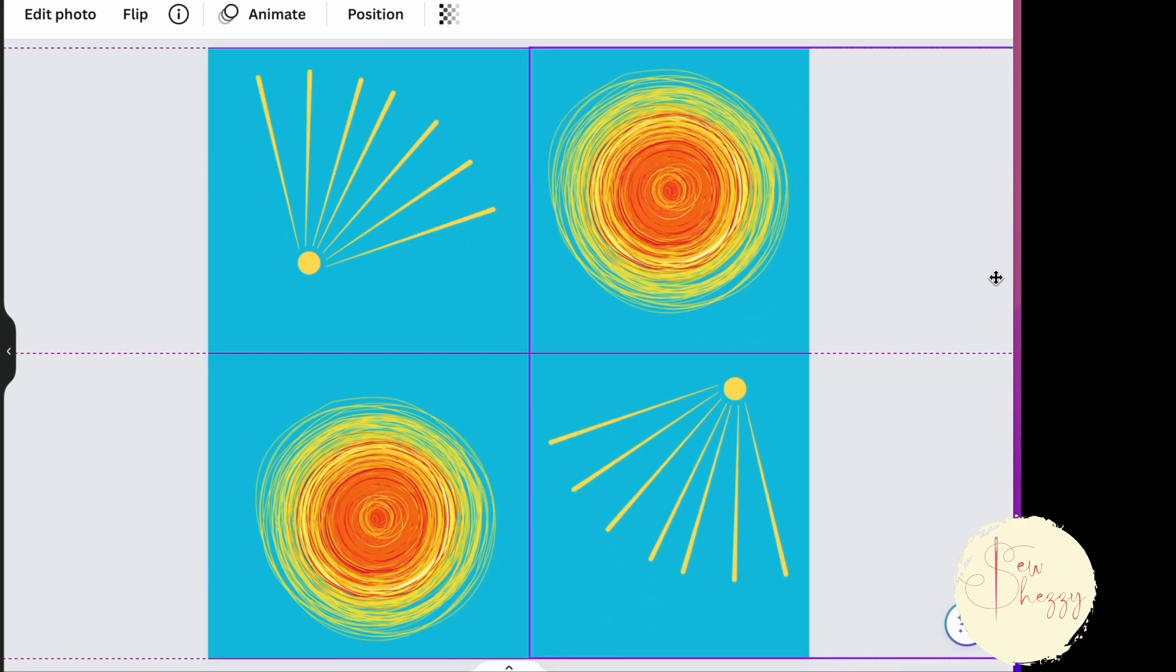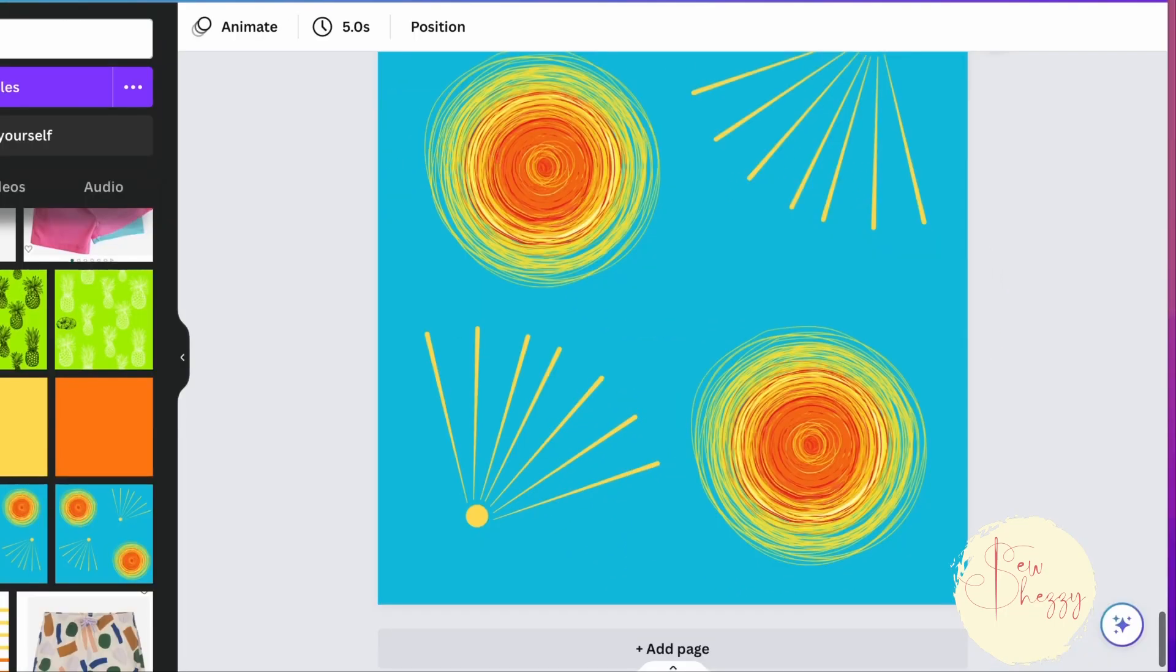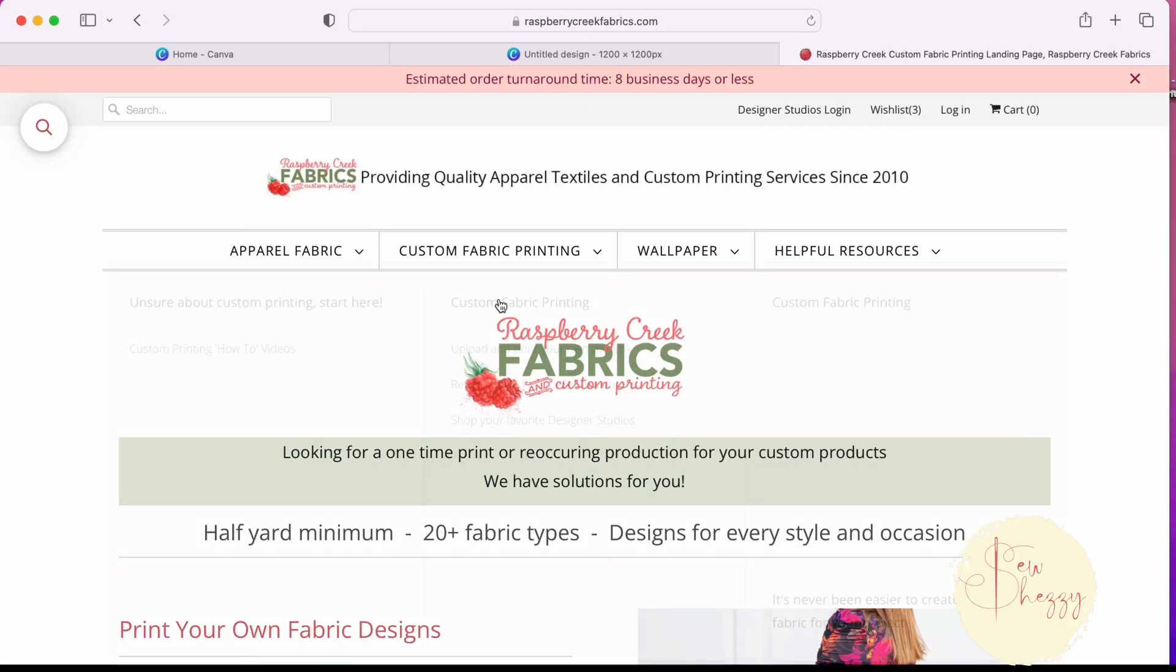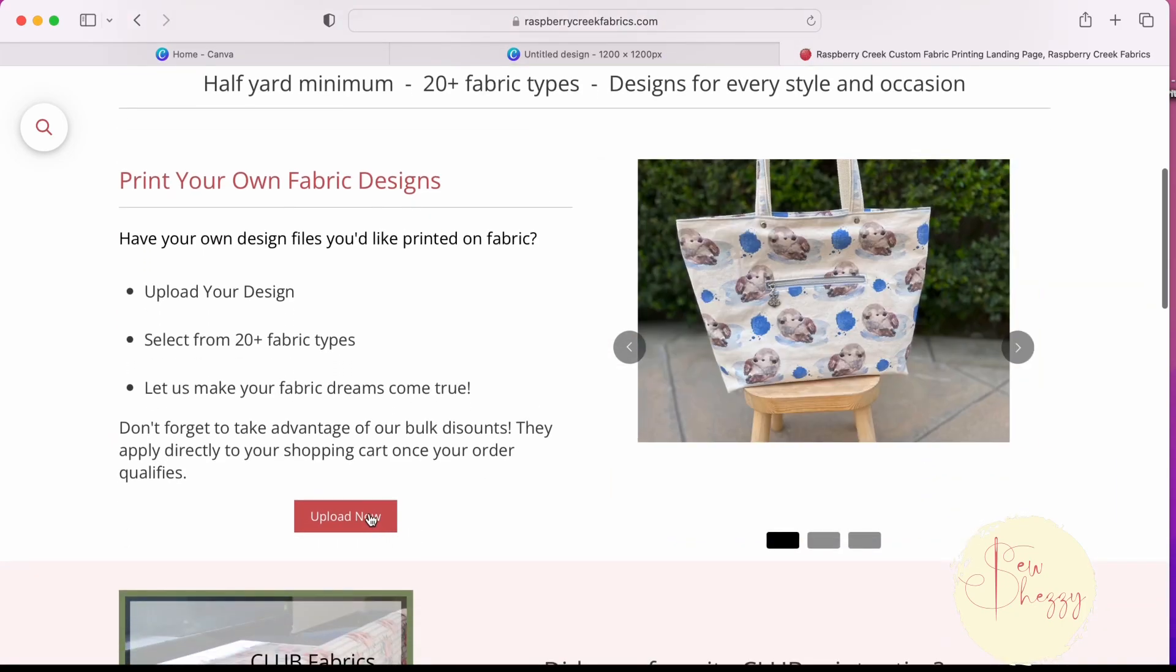I learned how to do that somewhere here on YouTube, so I'll link that video in the comments so you can see more detail. Then I decided to add some clouds because it felt like it needed a little something more, and with this beautiful blue background clouds felt like the right thing. I added those and once I was happy, I headed over to Raspberry Creek Fabrics to upload my design as a custom print.